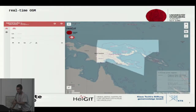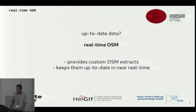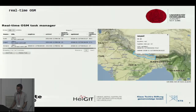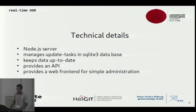In the end it basically looks like this, where you have a little checkbox where you can choose the region and it just switches instances. But you still need up-to-date data. This is where my little project came in, called Realtime OSM, to provide custom OpenStreetMap extracts. It provides a little API and a dashboard where you can create update tasks for extracting OpenStreetMap data.